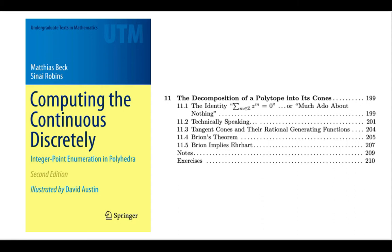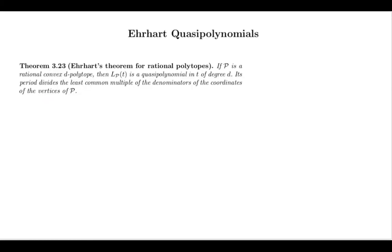We will show how Brion's theorem implies Ehrhart's theorem. More precisely, what I mean is Ehrhart's theorem for rational polytopes. So this is something we discussed in chapter 3. Let me remind you, we have a rational polytope, a d-dimensional polytope.